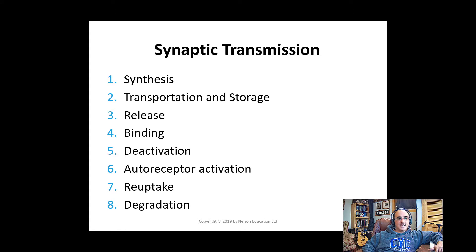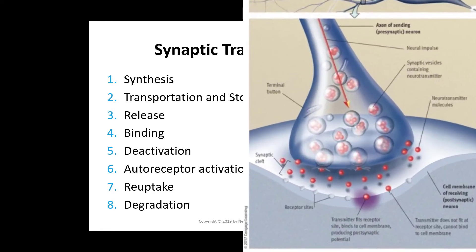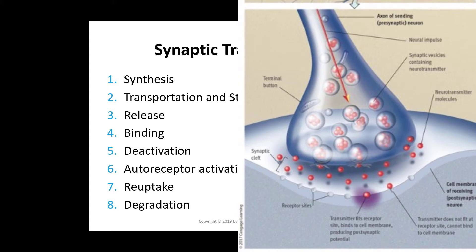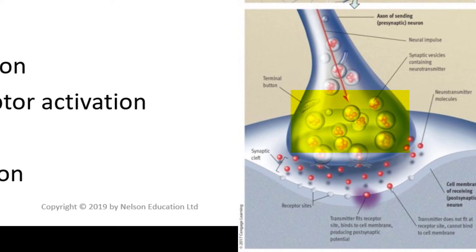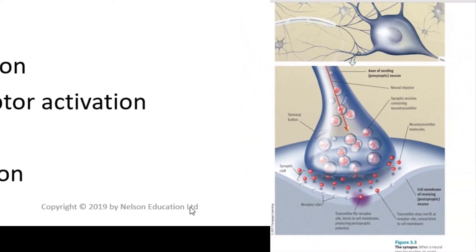Neurons don't actually touch at a synapse. Instead, they are separated by a microscopic gap between the terminal button of one neuron and the cell membrane of another — called the synaptic cleft. Electrical signals can't jump this gap. Instead, the presynaptic neuron releases neurotransmitters into the synaptic cleft when the action potential reaches the terminal button, causing synaptic vesicles — storage sacs for neurotransmitters — to fuse with the membrane and spill their contents into the synaptic cleft.